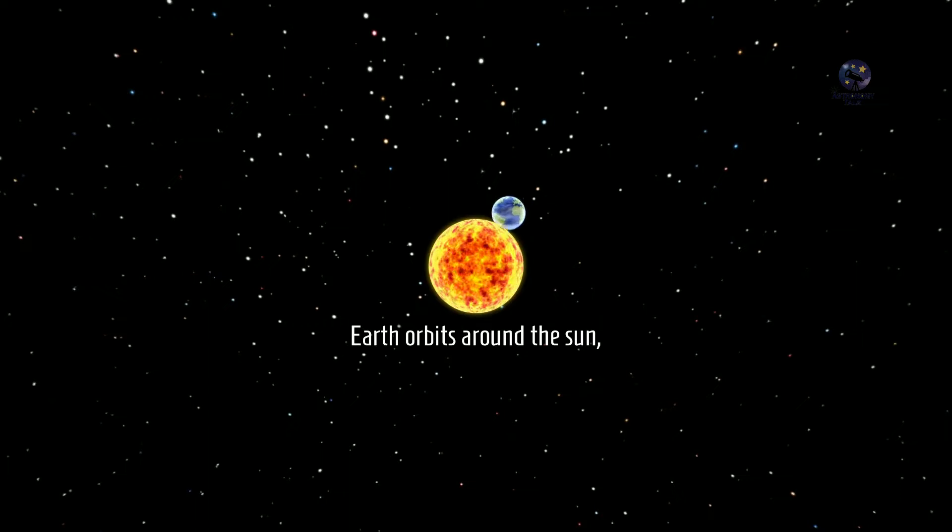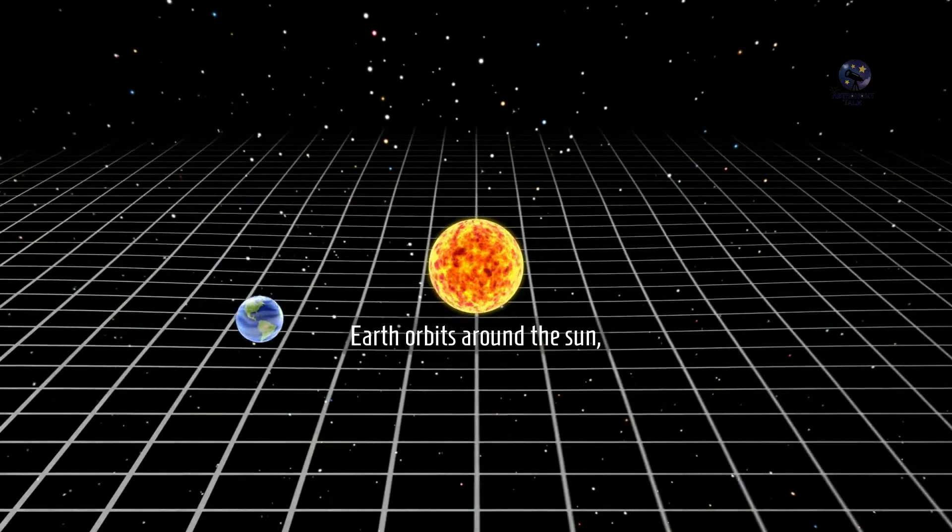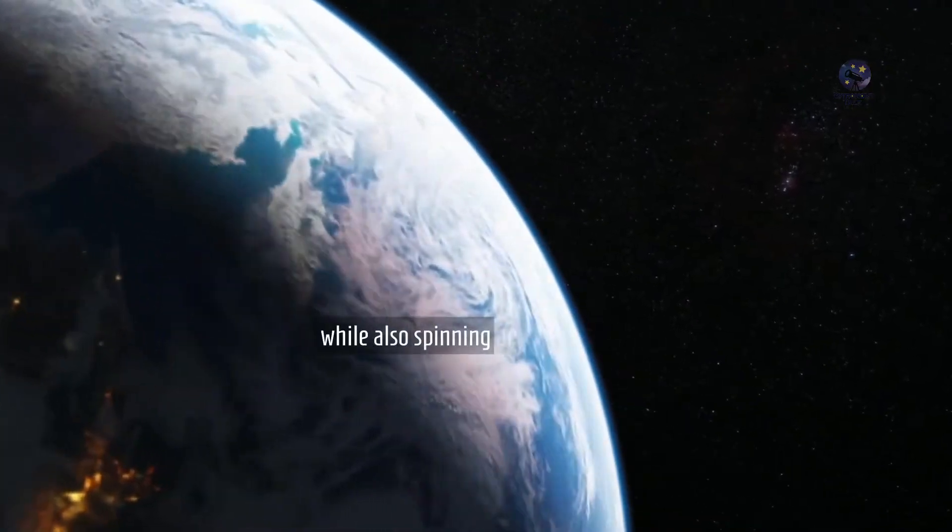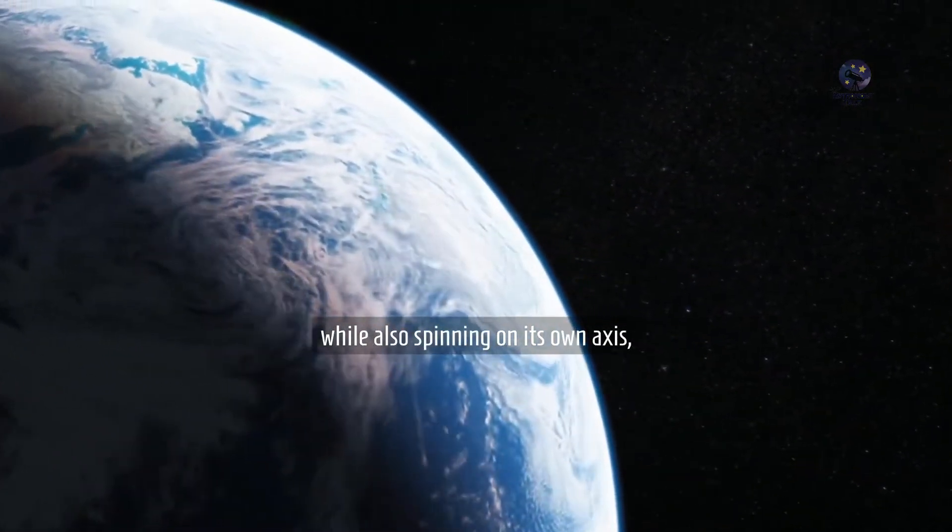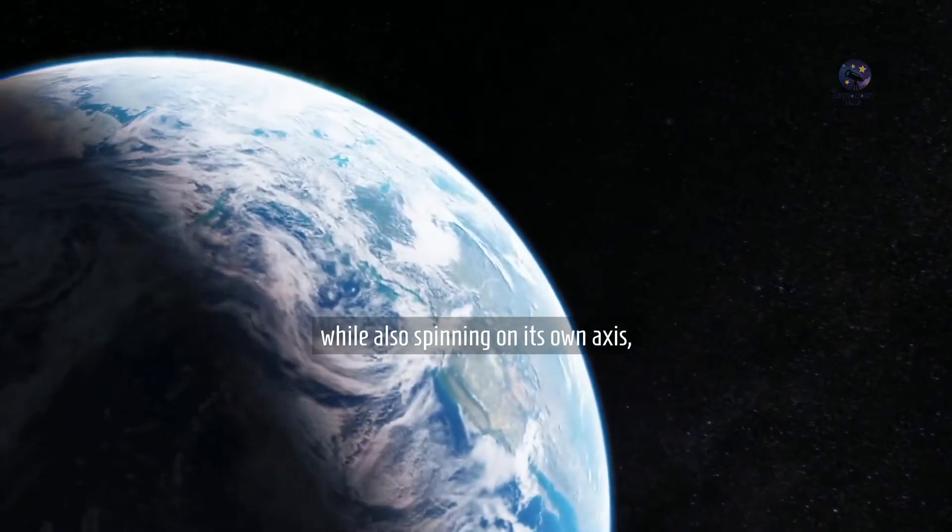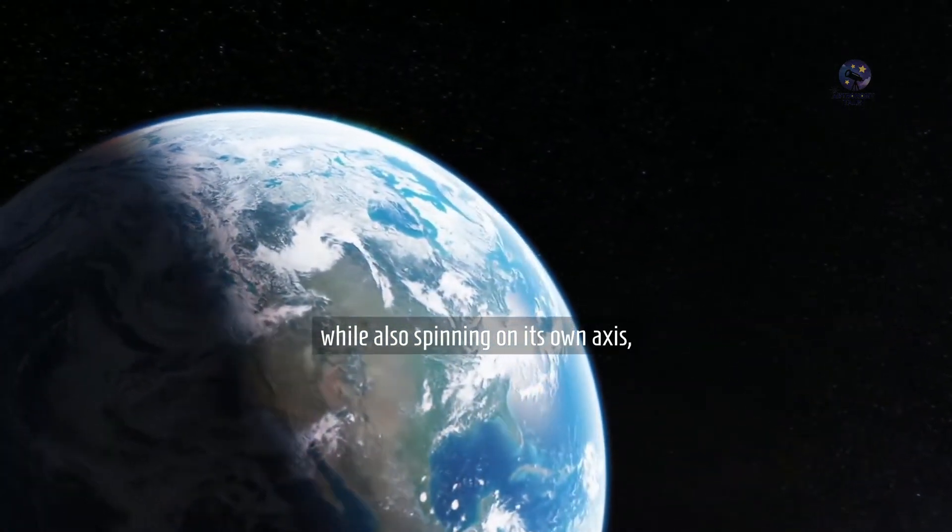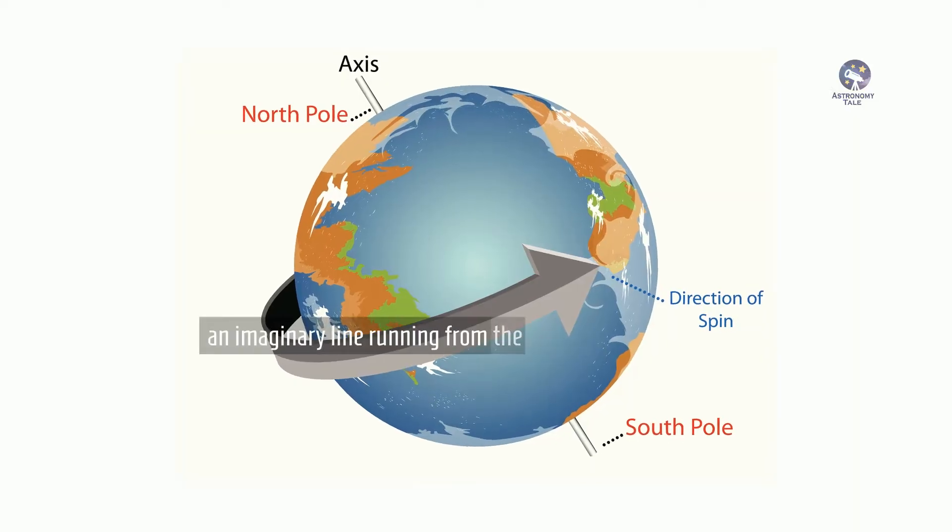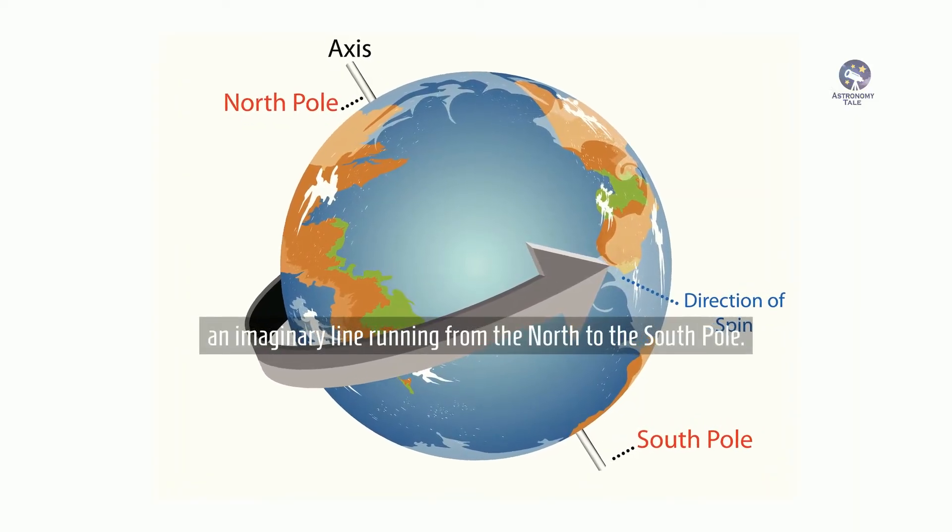Earth orbits around the sun while also spinning on its own axis, an imaginary line running from the north to south pole.